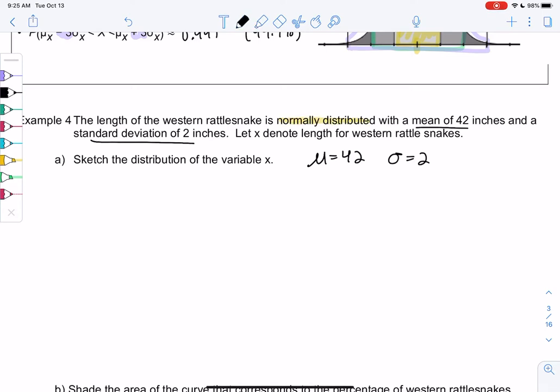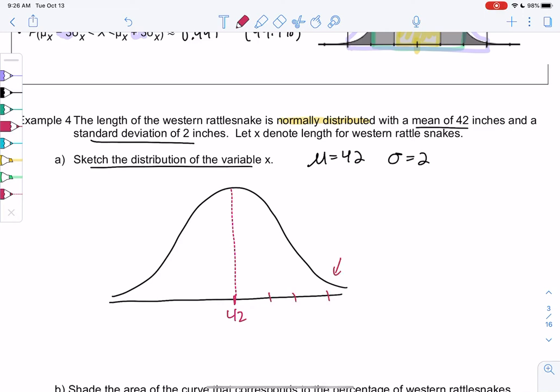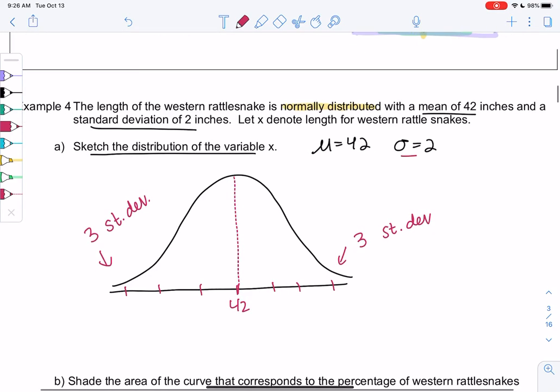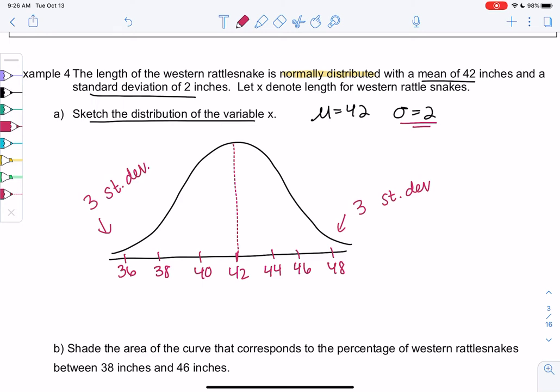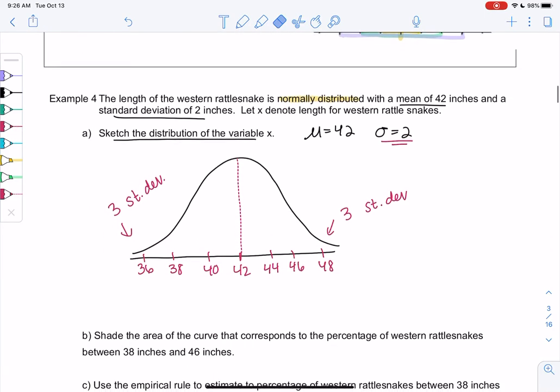So whenever I see the words normally distributed, I'm going to go ahead and draw that normal curve. And that will be my distribution of the variable x, and we'll just label the number line. So I'm going to go ahead and put the mean in the middle. And then we just go 3 standard deviations in each direction. 1, 2, 3. 1, 2, 3. It's always 3. And so our standard deviation is 2, so we just count by 2 three times. So 42, 44, 46, and 48. Stop at the third one. Left side we subtract: 40, 38, 36. And that is a sketch of the curve. That is a sketch of the distribution.